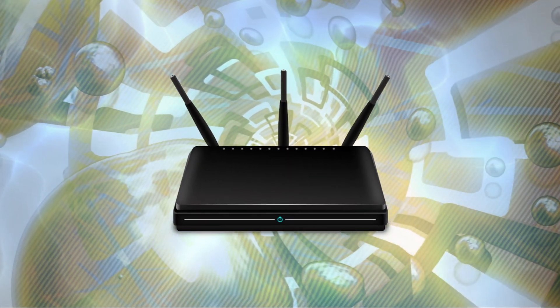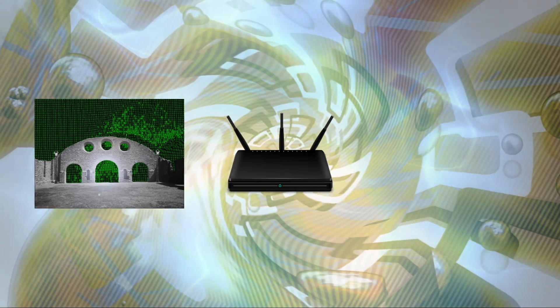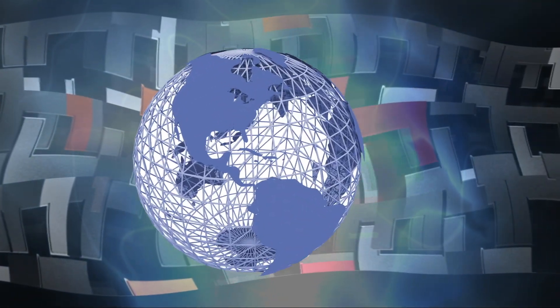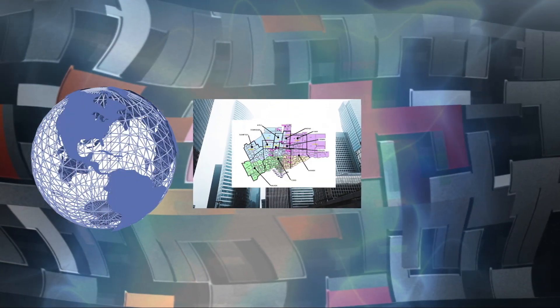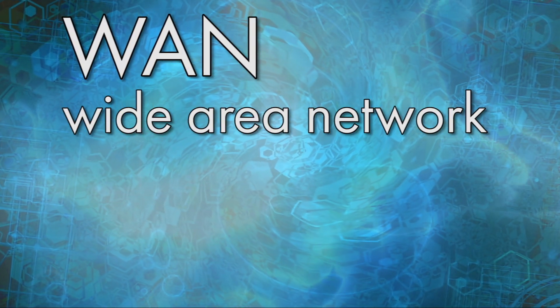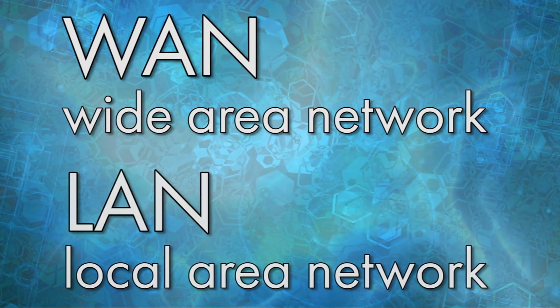Every router on the internet essentially has two things, a gateway to the public internet, and one or more subnets. Think of the internet as the world, a network as the city, and a subnet as the postal codes in that city. On most modern equipment, the public network is called the WAN, or Wide Area Network, and the subnets are called the LANs, or local area networks.